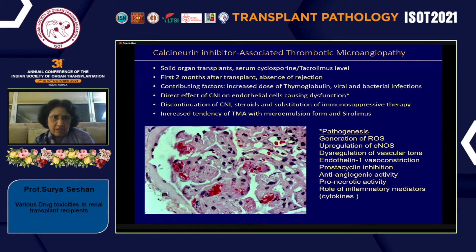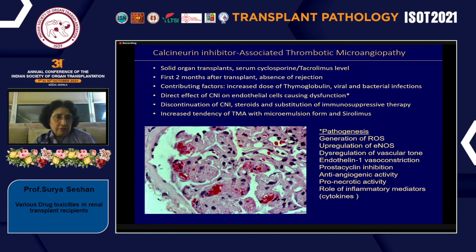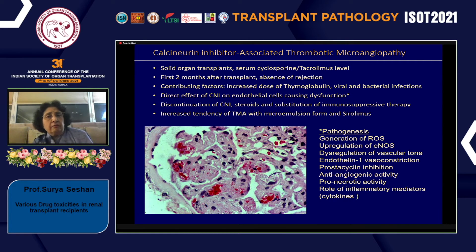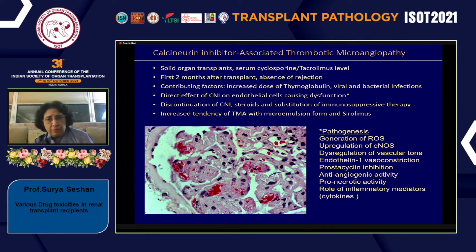CNI-induced TMA can occur in most solid organ transplants, but is much rarer now because levels are carefully monitored. It usually occurs within the first two months of transplant without evidence of rejection. Contributing factors include potentiation of endothelial injury primed by thymoglobulin, a second hit by viral or bacterial infection, or direct CNI effect on endothelial cells. Treatment is discontinuation of the CNI, steroids, and substitution with another immunosuppressive therapy.